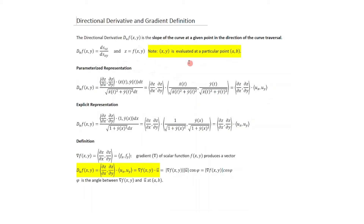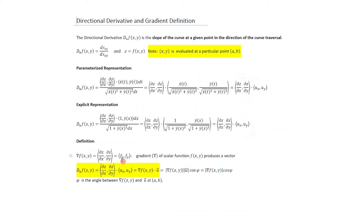We had two ways of representing the direction of travel: the parameterized representation (X and Y in terms of T) and the explicit representation (Y in terms of X). Both approaches yield the same expressions. The gradient is defined as the vector [∂F/∂X, ∂F/∂Y].